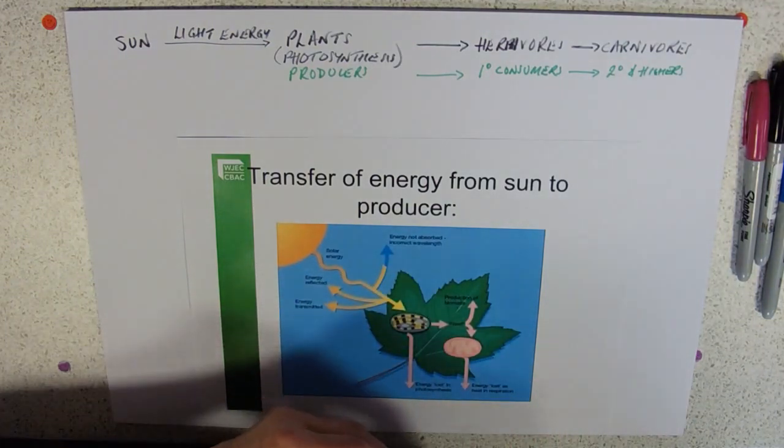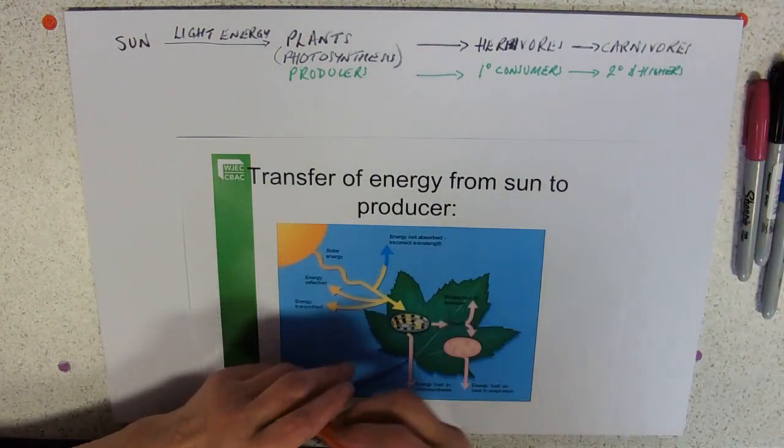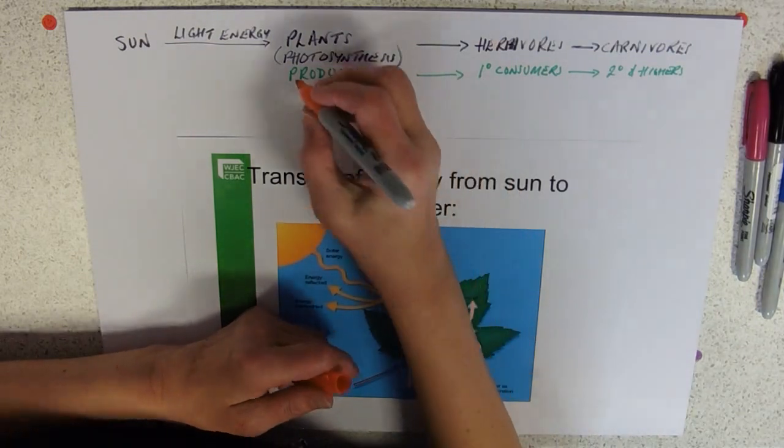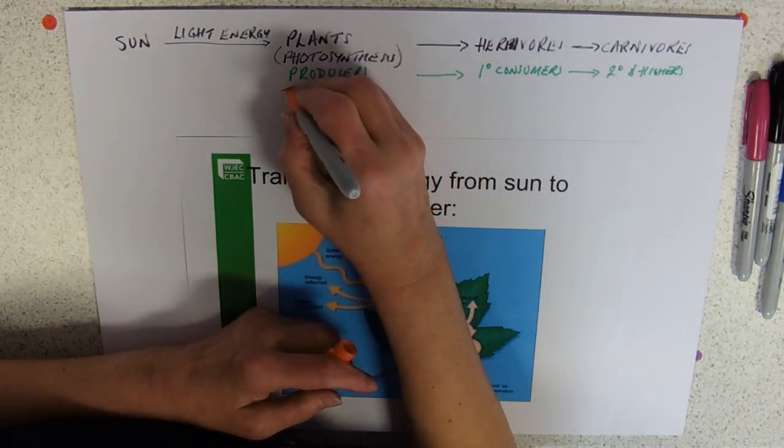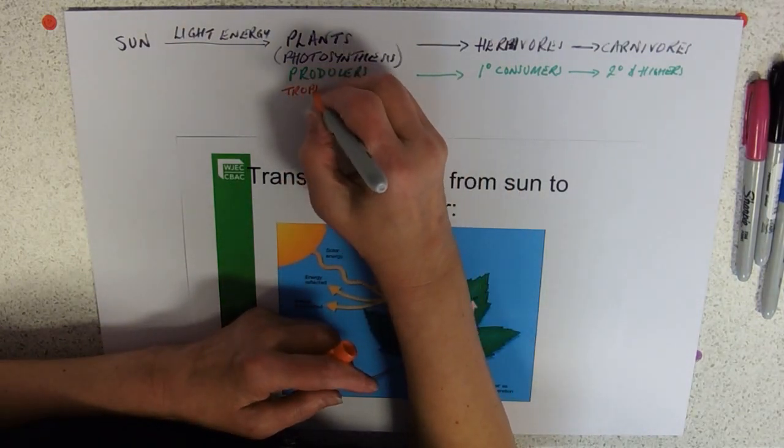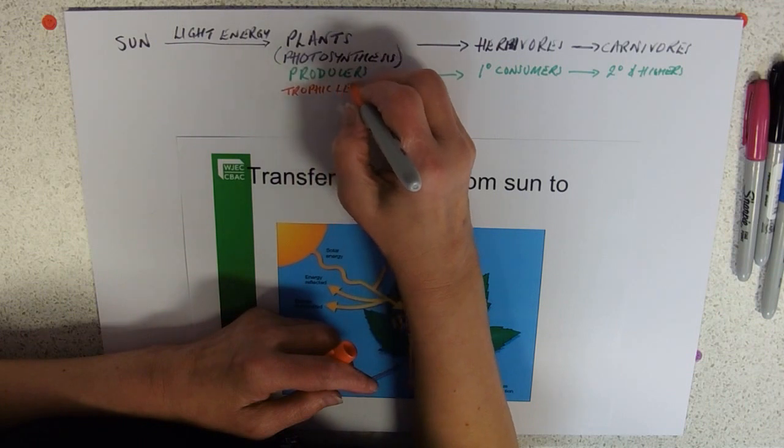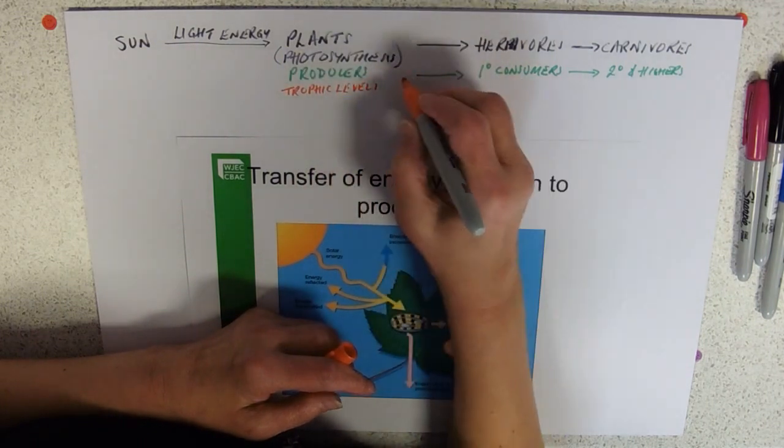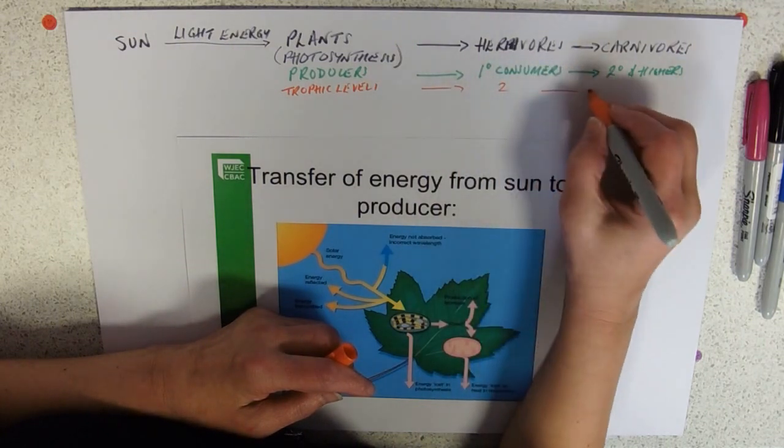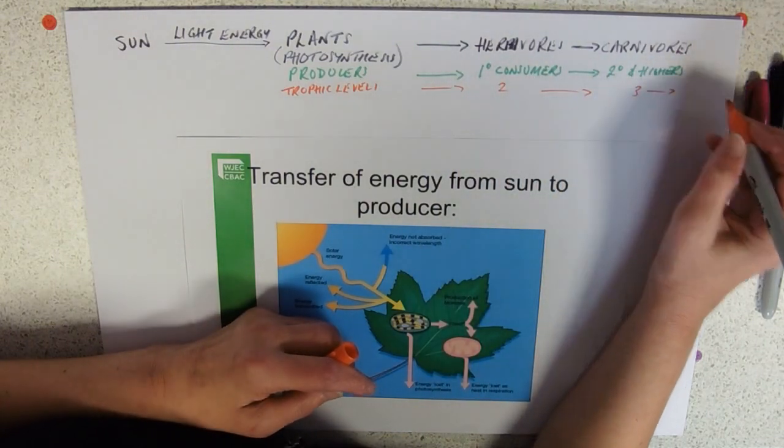And of course, we refer to these as feeding levels. So producers are on trophic level 1, and then we go up to trophic level 2, trophic level 3 and so forth.